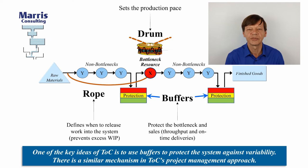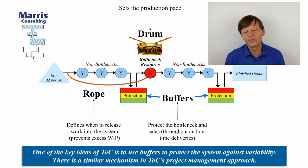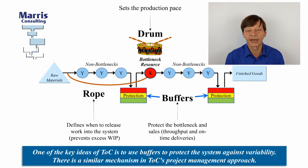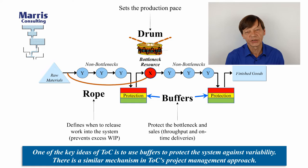The buffer absorbs problems in the flow before the bottleneck — such as breakdowns, absenteeism, quality problems — but also importantly it will absorb overloads on non-bottlenecks. Because even though a non-bottleneck by definition has excess capacity, it can have too much work for an hour or a day and end up with multiple work orders to handle. All those variabilities are taken into account, enabling you to make sure that the bottleneck never stops — because one of the rules of the Theory of Constraints is: an hour lost on the bottleneck is an hour lost for the system.